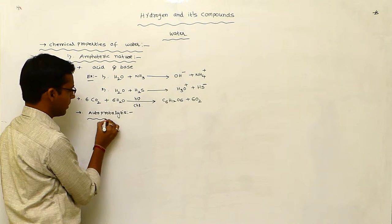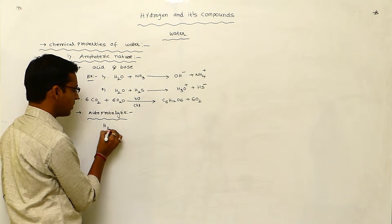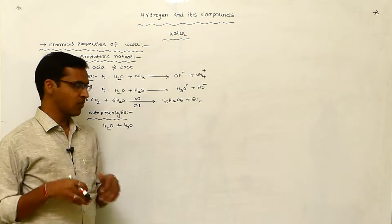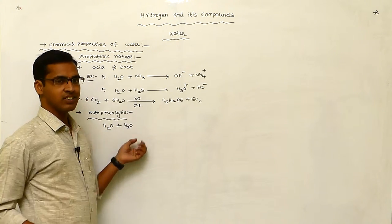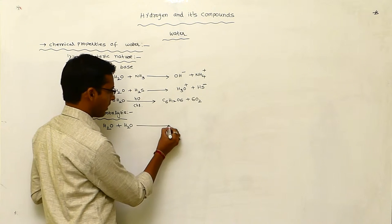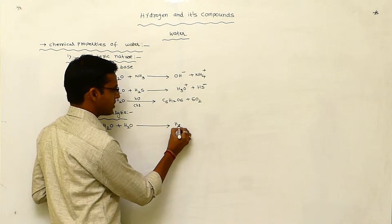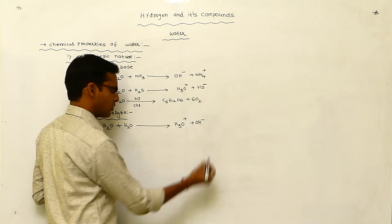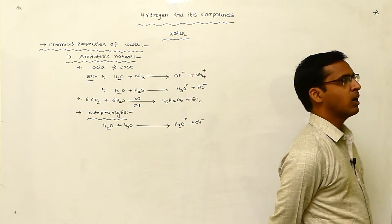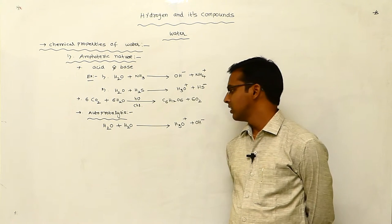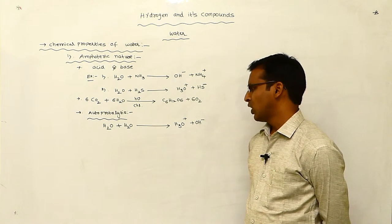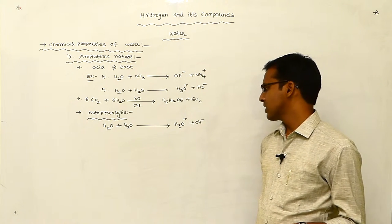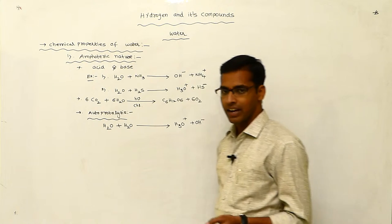Autoprotolysis means the water molecule itself undergoes oxidation. It is converted to H3O⁺ (hydronium ion) and OH⁻. Meaning 2 moles of water molecule undergo autoprotolysis — a self-reaction — giving hydronium ion and hydroxide ion.